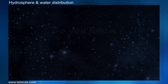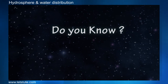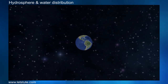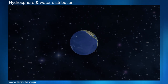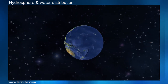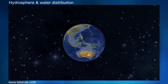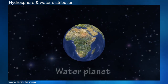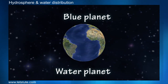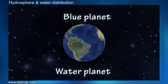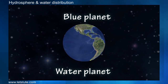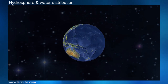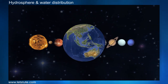Friends, do you know something? If you view planet Earth from space, it looks blue, as the major part of Earth's surface is covered with water. This is the reason why Earth is known as the water planet or blue planet, and this abundance of water is what distinguishes Earth from other planets of the solar system.